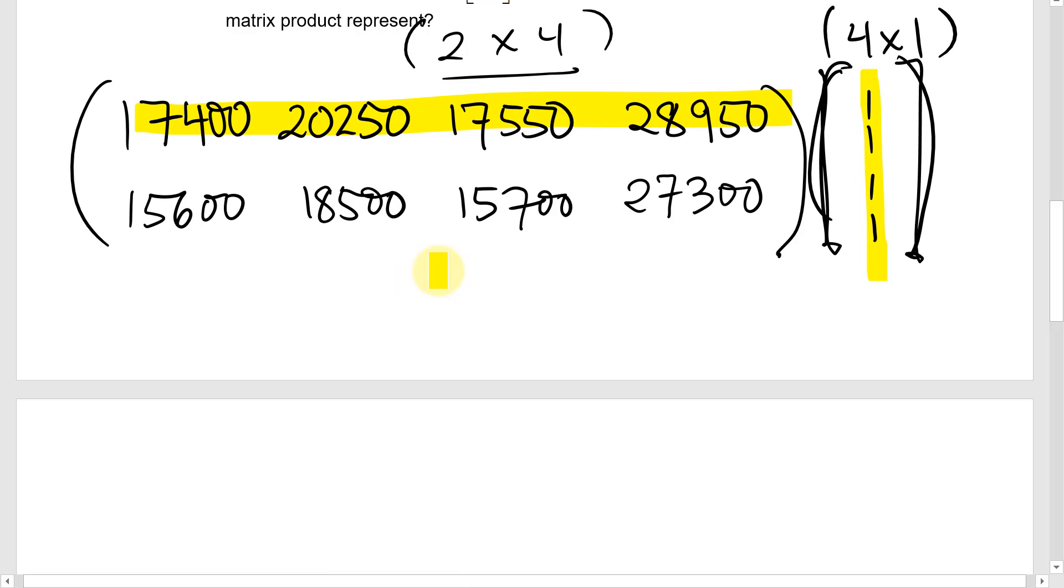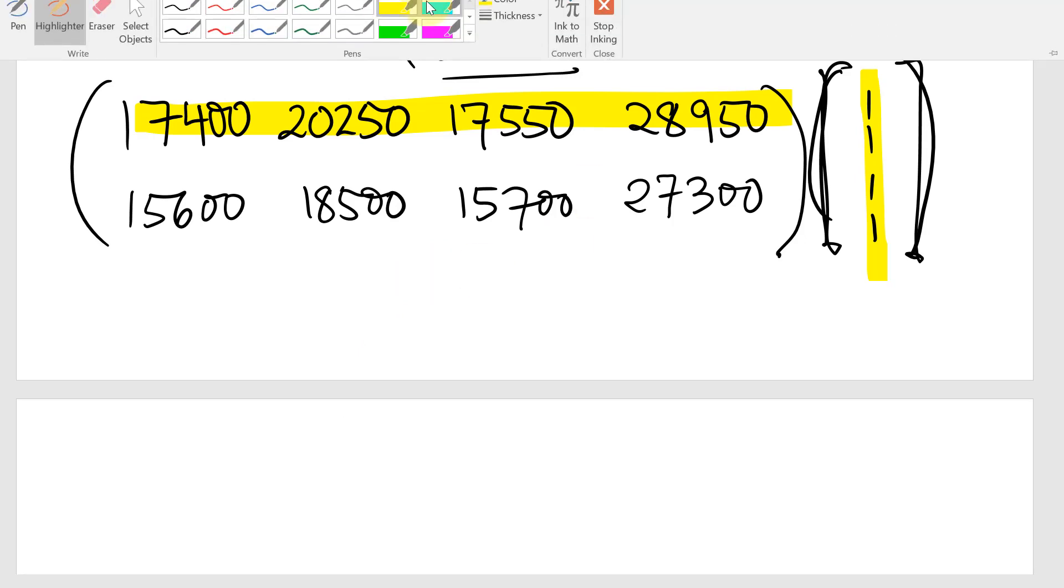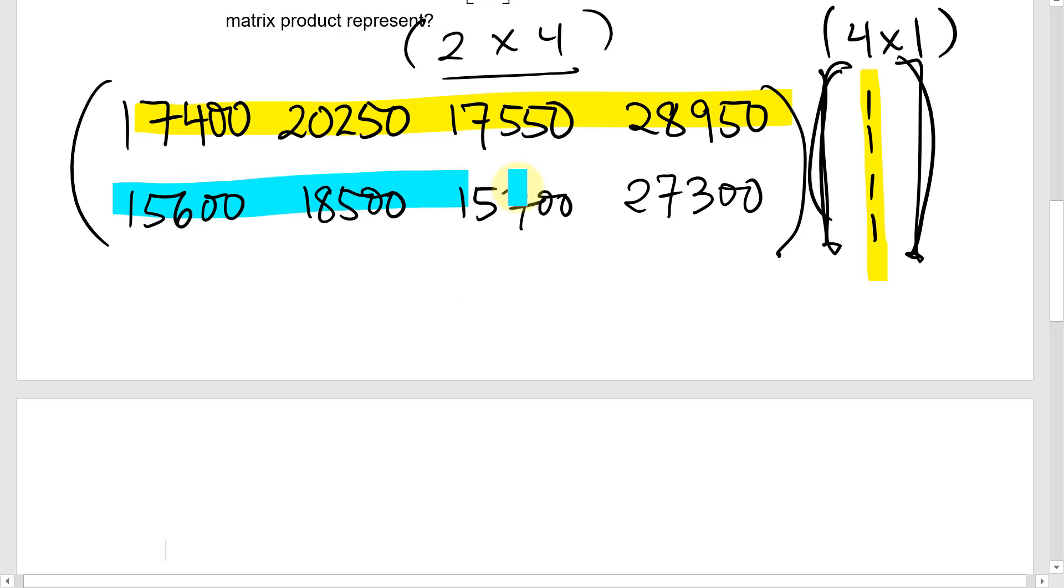And then, if we multiply this row times that column, we're going to get the total material costs for the year. So we'll get total labor and material costs for the year. This being labor. This being the labor costs along the top. And the blue one being the material cost. So it will be total labor and material costs for the year.